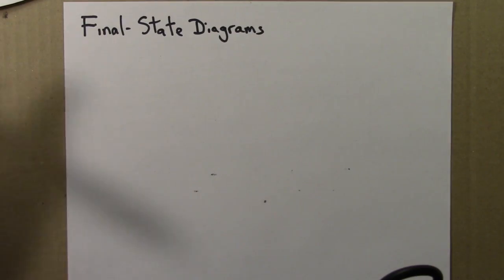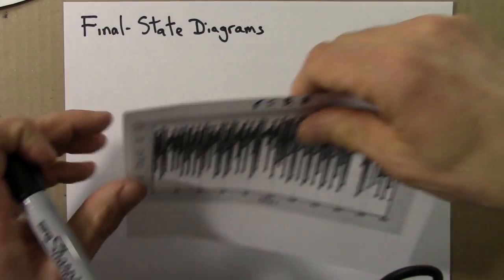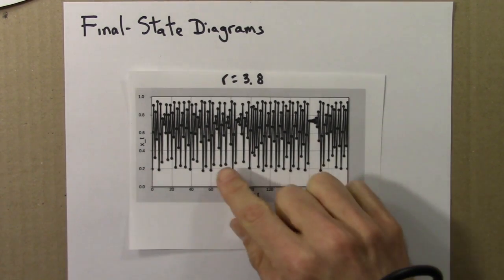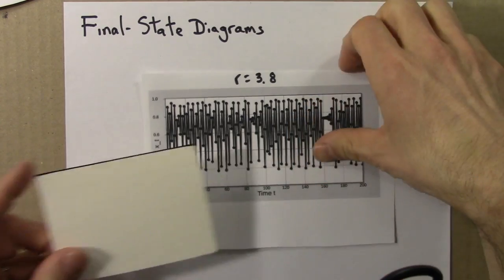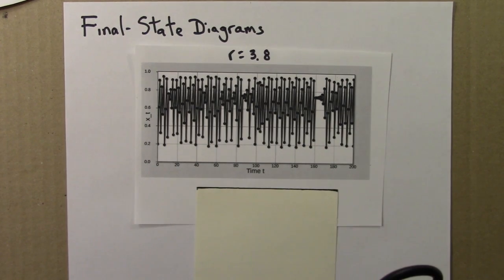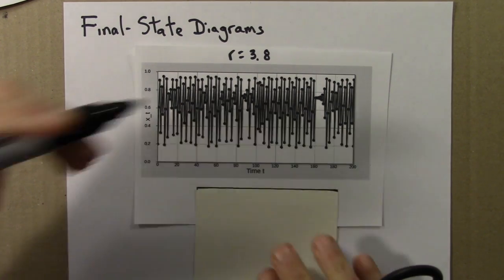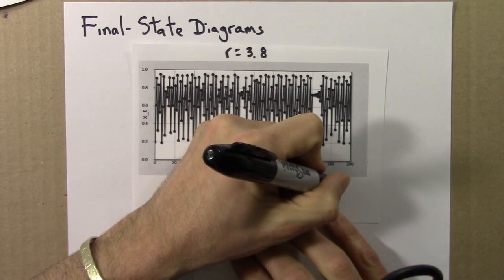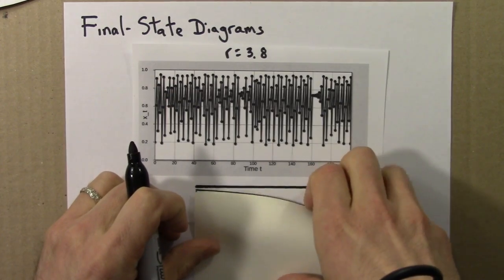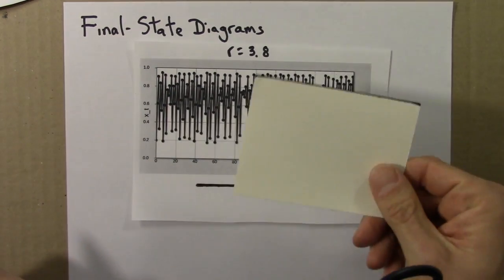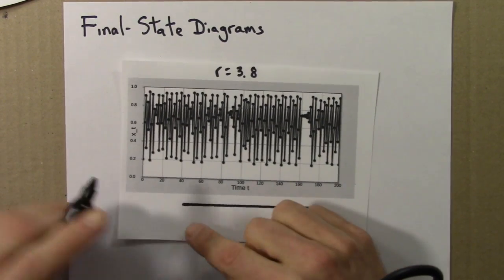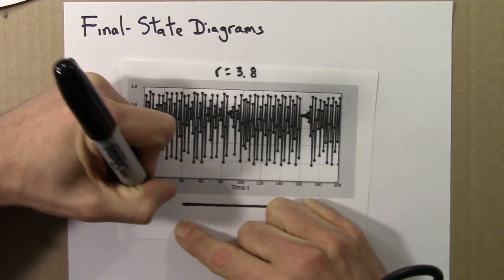And lastly, let's think about a final state diagram for R equals 3.8. This is an aperiodic value. And let me draw the line for the final state diagram. I'm using this index card so that all the lines are the same size. Okay, so now, let's see, I'll write R equals 3.8.